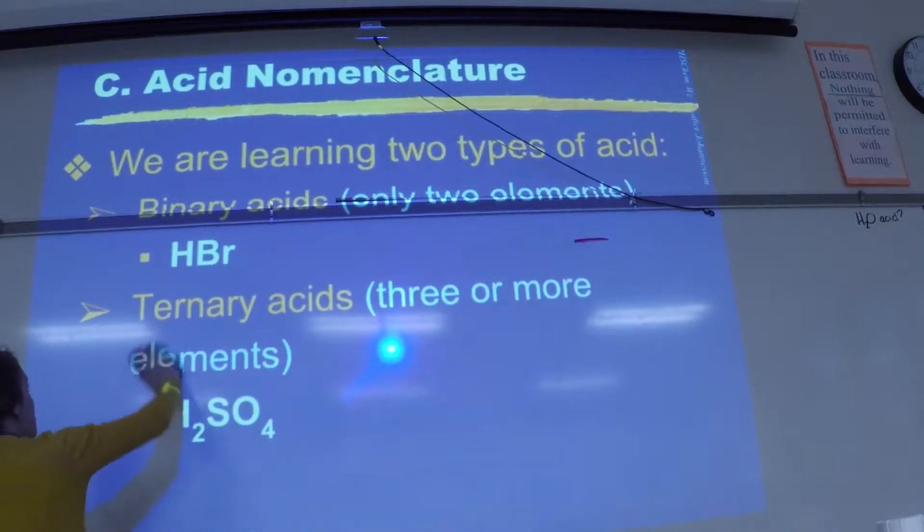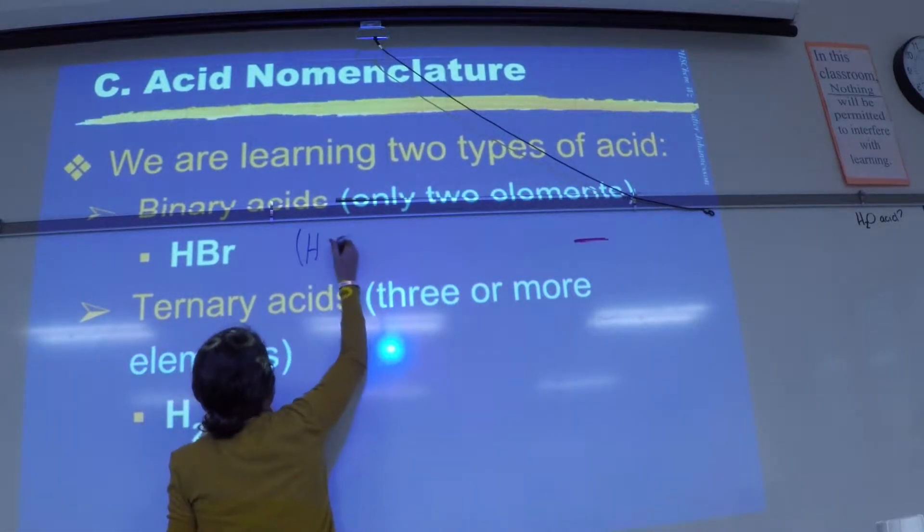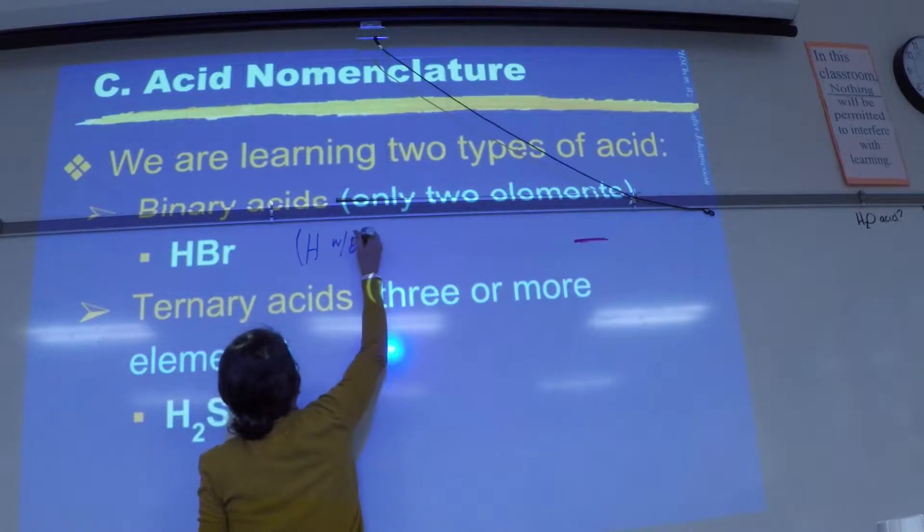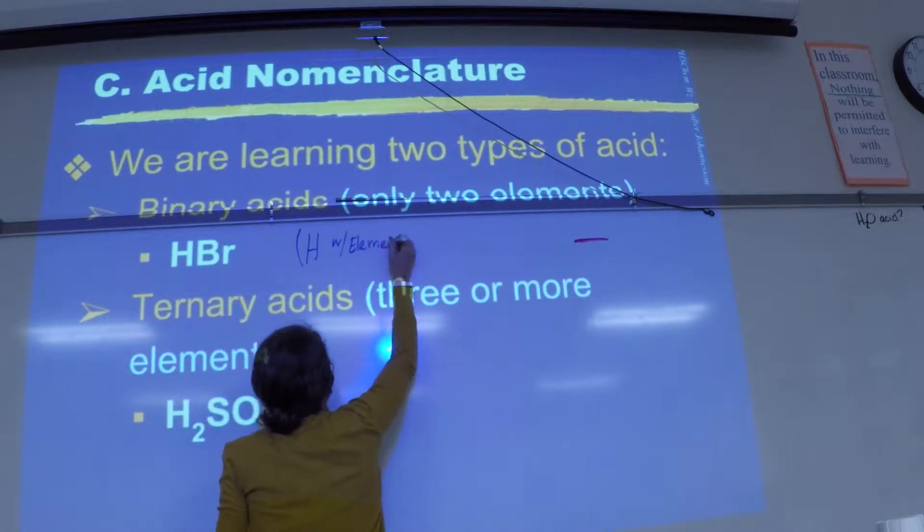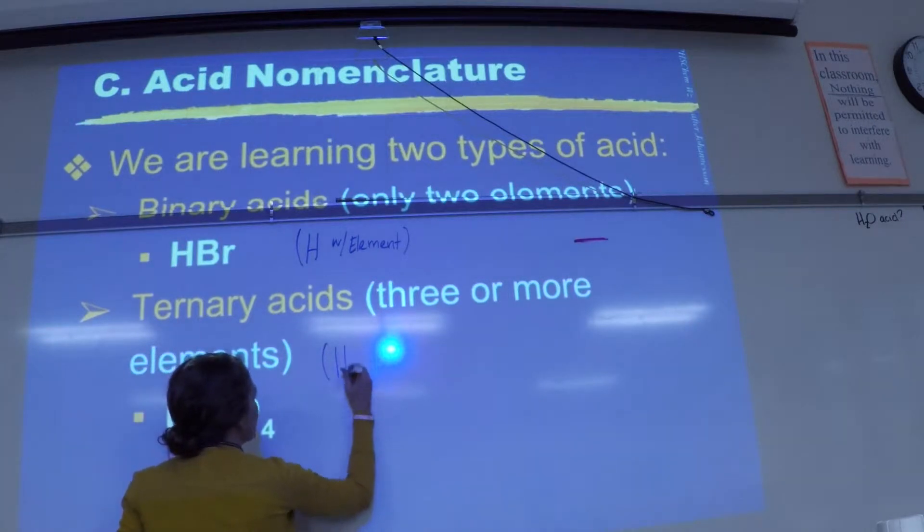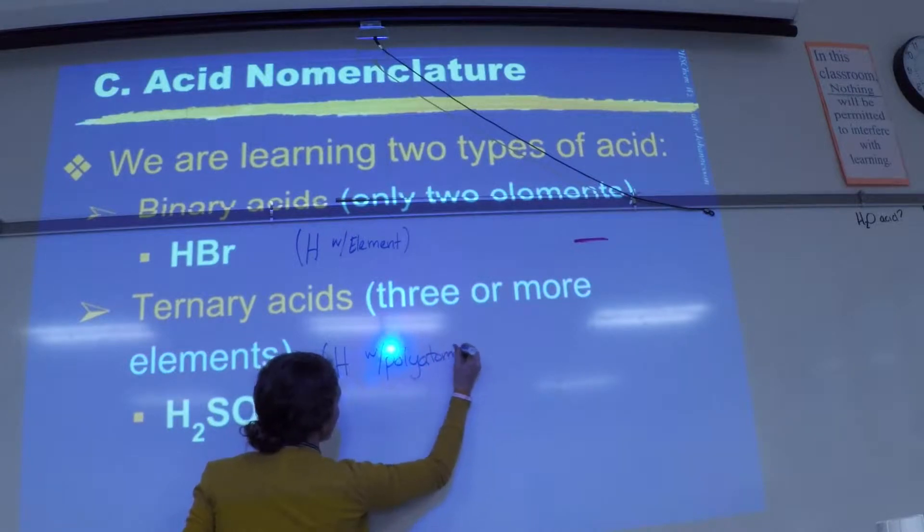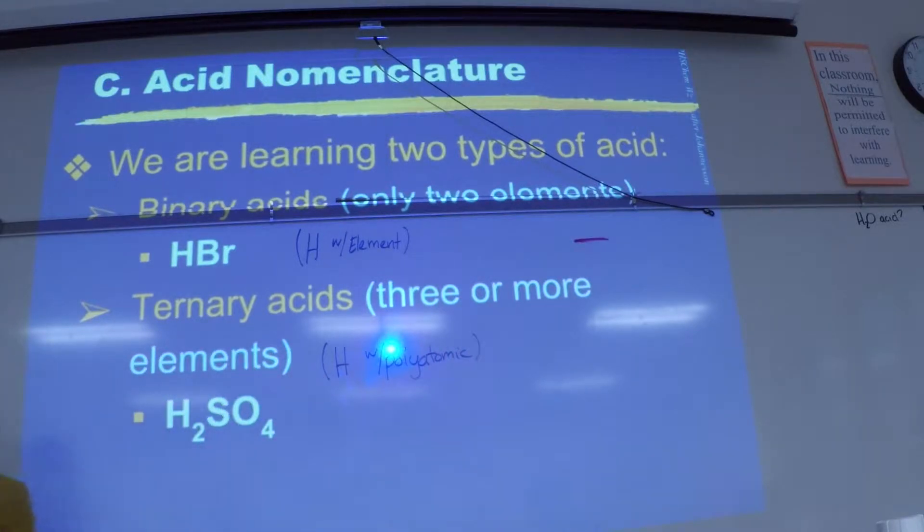The simple way to think about this is a binary acid means you have hydrogen with an element. So hydrogen is with just an element, it's considered binary. If you have hydrogen with a polyatomic, then it's a ternary acid. So it's pretty much depending on what side you're looking at.